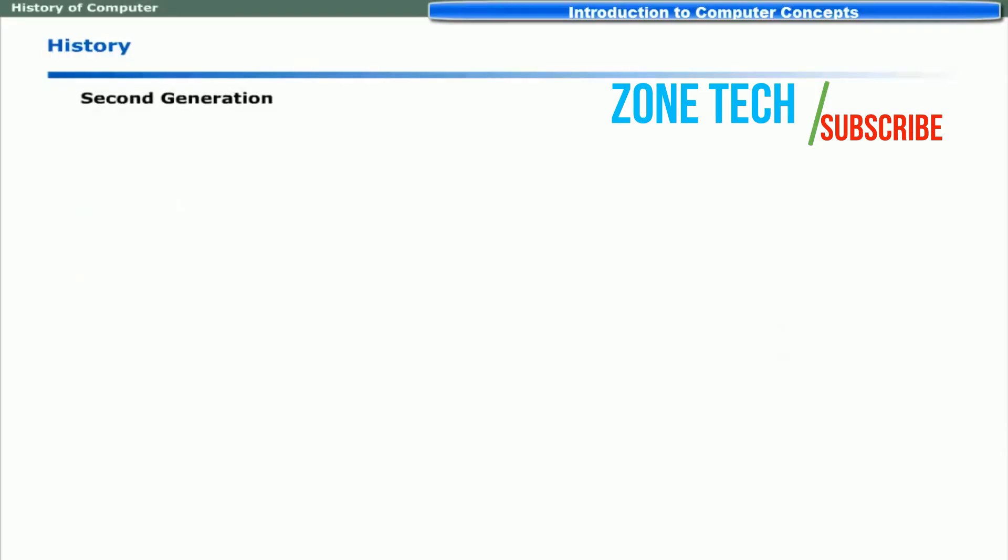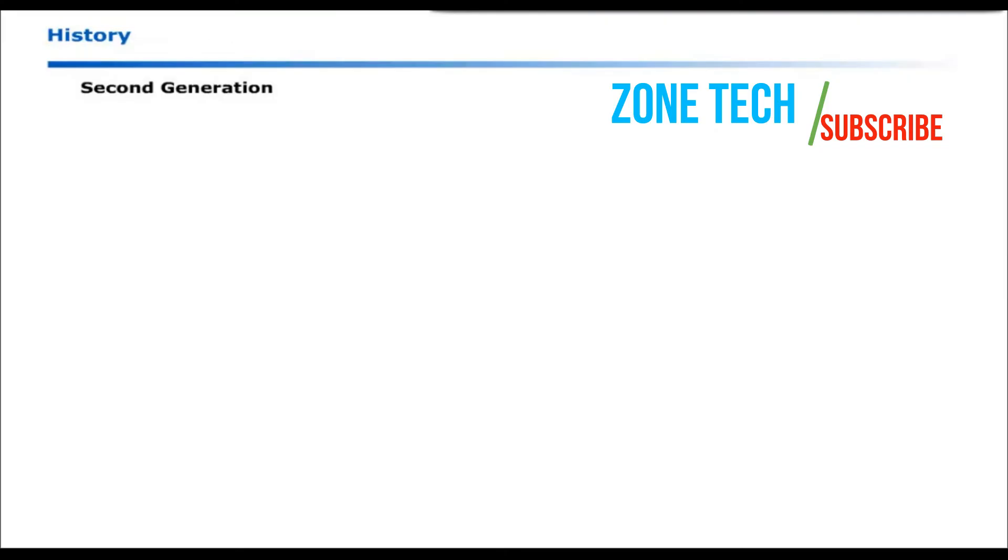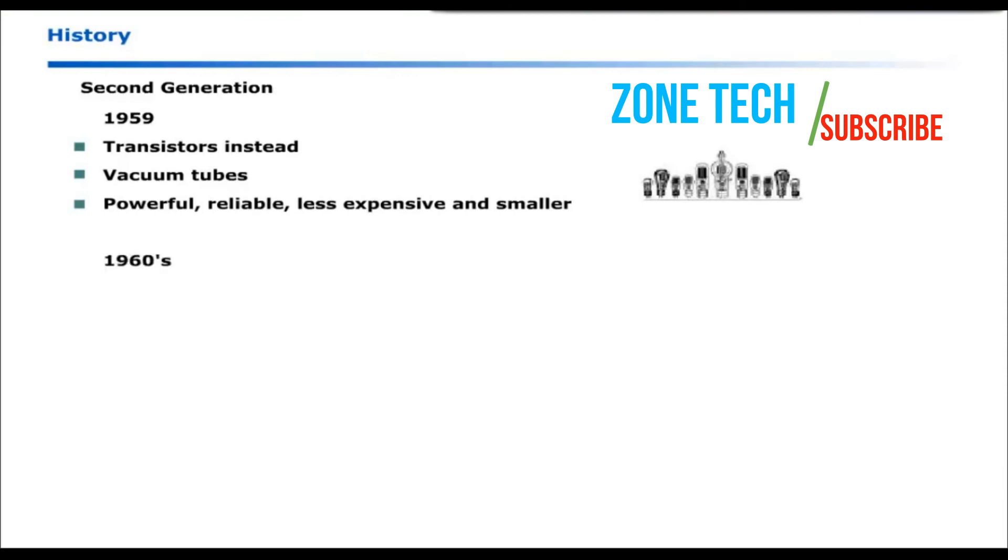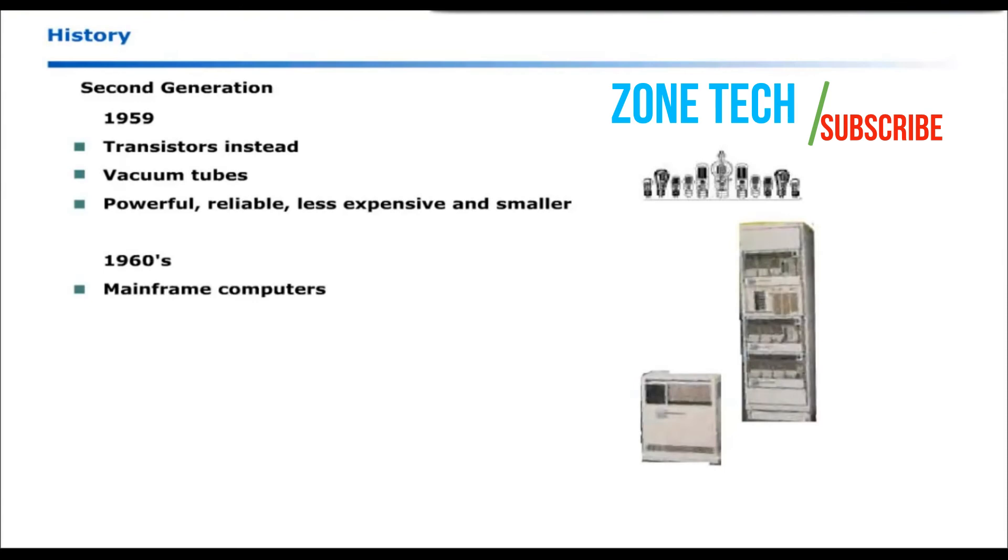Second generation computers were introduced during 1959. These were built by using transistors instead of vacuum tubes. These computers were more powerful, reliable, less expensive and smaller in size than their predecessors. Until early 60s, only large companies were producing mainframe computers.